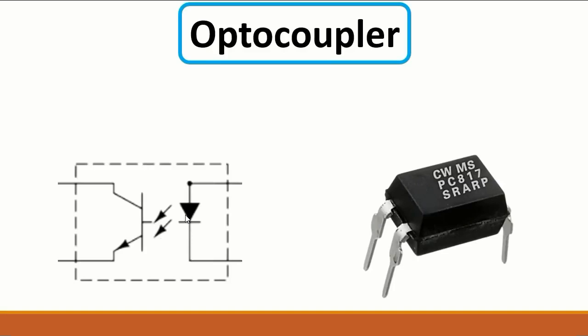This is a normal transistor but its base is not sensitive to current — it's sensitive to light. Once a current passes through the LED diode, the diode emits light. The photo transistor has a collector, emitter, and base; its base receives that light as a control signal, and then the signal passes through to the output.